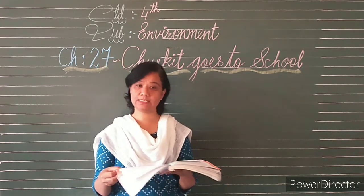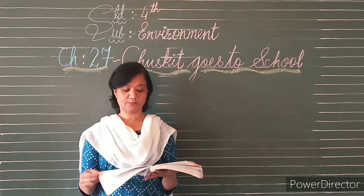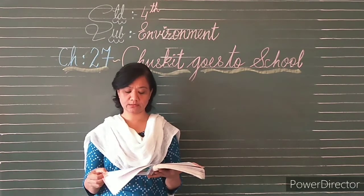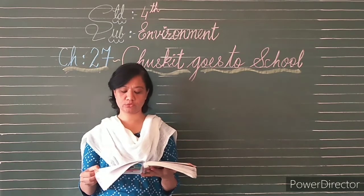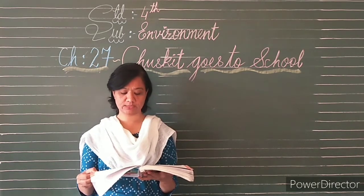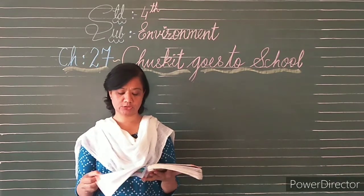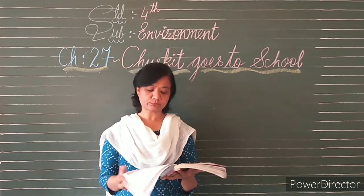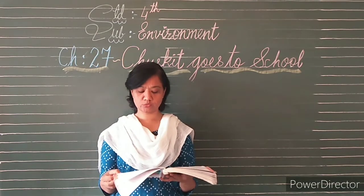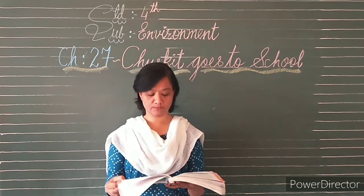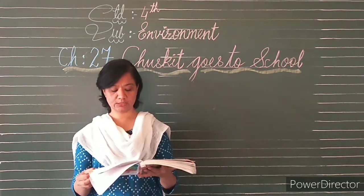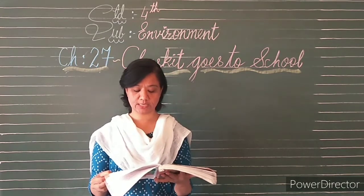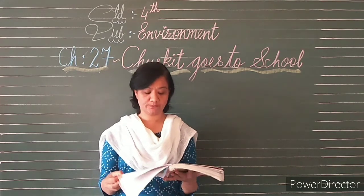A good idea. Abdul went back from Chuskit's house but he had started thinking of how to get Chuskit to school. He explained about Chuskit to the headmaster and talked to the teachers till they agreed with his thought. Now everyone got together to work so that Chuskit's problem could be solved. They made a plan so that Chuskit could bring her wheelchair by road to school.